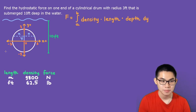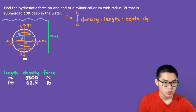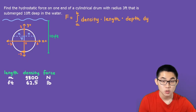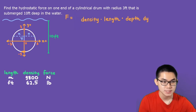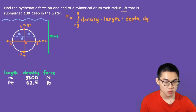First, let's find a and b. We want to find the hydrostatic force acting on the object from the very bottom to the very top of the circle, so that distance goes from negative 3 to positive 3 — so a is negative 3 and b is positive 3. Since the problem is in feet, the density will be 62.5.